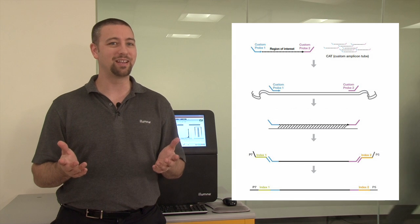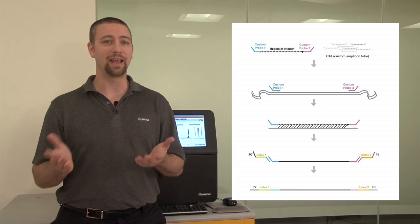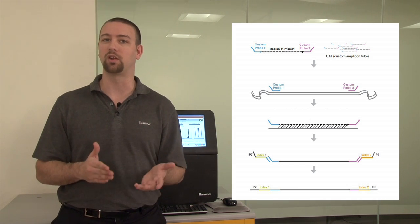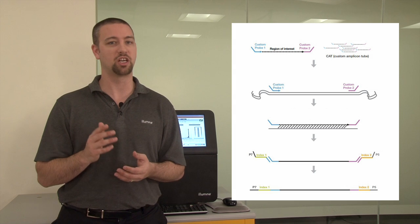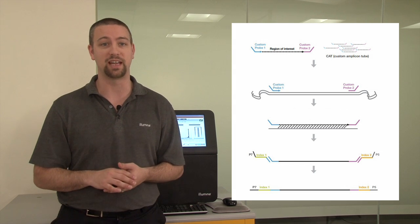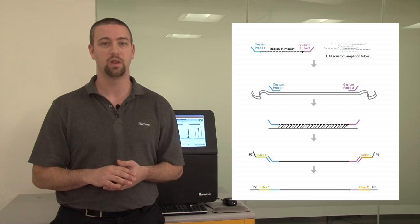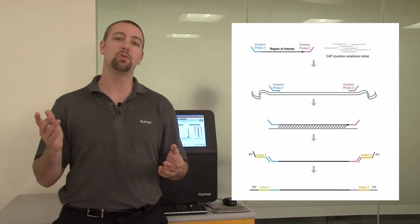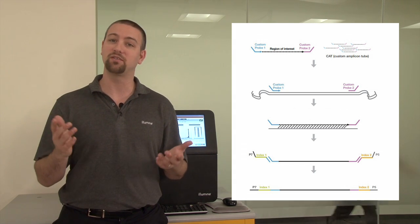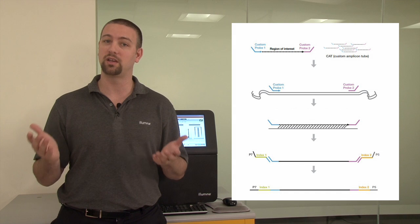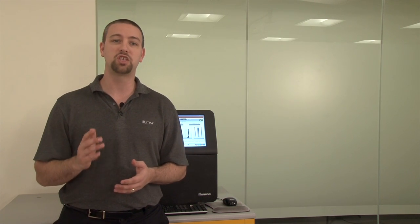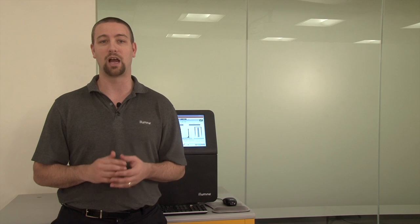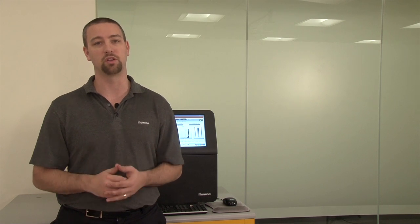While this can greatly increase throughput and decrease sequencing costs, it does require some specific considerations to generate good sequencing data. In this video, we will discuss the impact of sequencing amplicon and low diversity libraries on Illumina instruments and share our best practices for generating optimal quality results.